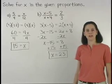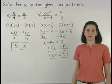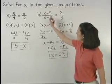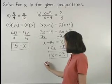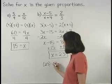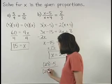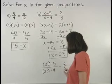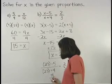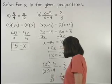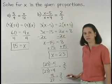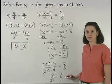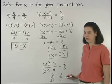Finally, it's a good idea to check the answer in these types of problems. For example, if we plug 23 back in for the x in part B, we have 23 minus 5 over 23 plus 4 equals 2 thirds, or 18 over 27 equals 2 thirds. And 18 over 27 equals 2 thirds is a true statement because 18 over 27 reduces to 2 thirds.